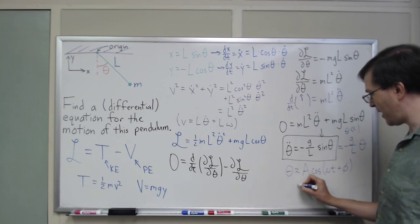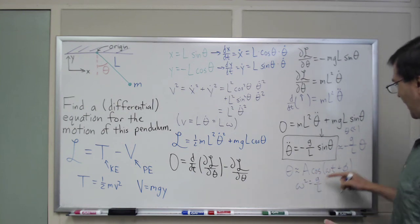And all we know is that omega squared has to equal g over L, and that will solve this. This is one form of a general solution to that differential equation, but to the approximate differential equation.